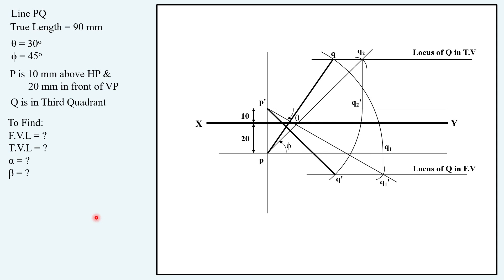If you follow the steps and obtain the solution in this manner, the final answer is: front view length = 64 mm, top view length = 78 mm, alpha = 45°, and beta = 55°.